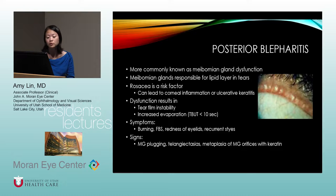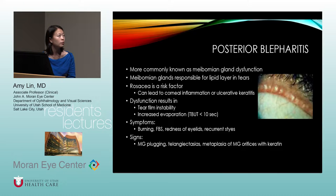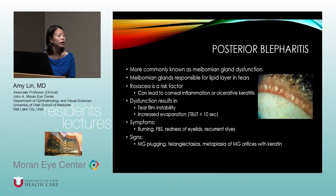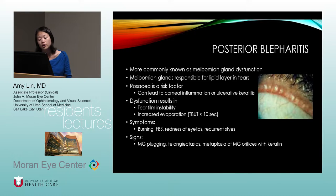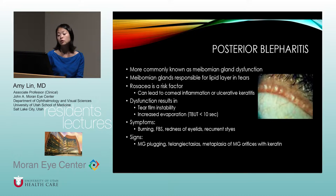Meibomian gland dysfunction results in tear film instability. You can measure that increased evaporation by looking at tear breakup time — you put a drop of fluorescein in the eye, turn on the cobalt blue light on the slit lamp, and after the patient blinks you start counting. Once you see a black space appear in the tear film, you stop. If that number is less than 10 seconds, that's decreased tear breakup time or increased evaporation.